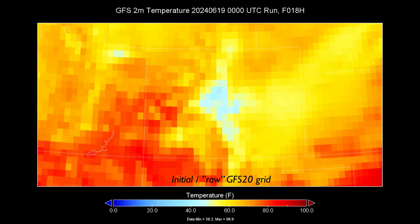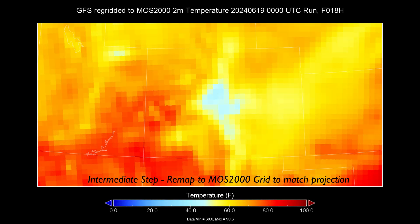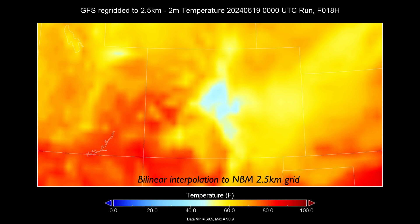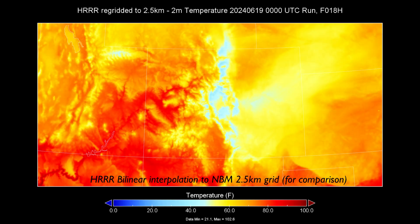There are different types of interpolation that can be performed on the model inputs to get them all to the same 2.5 km resolution. The NBM uses three different types of interpolation depending on what meteorological parameter is being worked on. These three types are found in the description of field-selected algorithms for the National Blend of Models document in the References tab of this lesson. The key point is that there are a bunch of intermediate steps from the raw model output down to the blend, which can result in losing some key details and information.